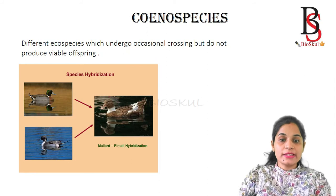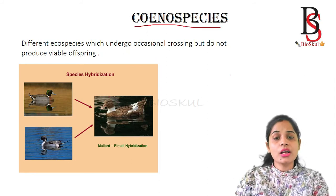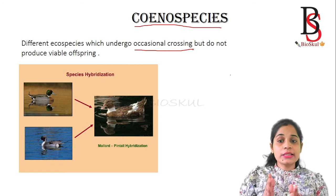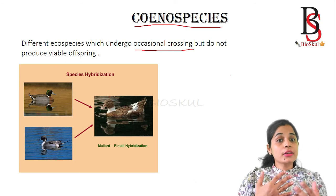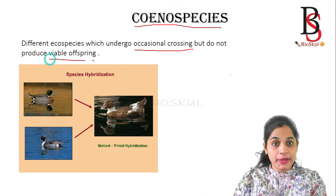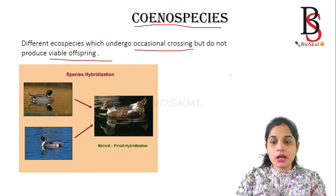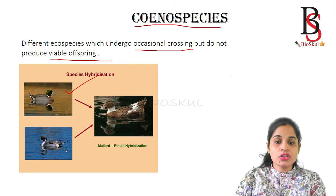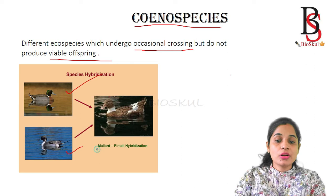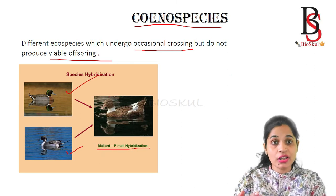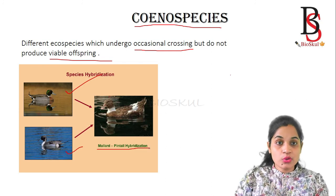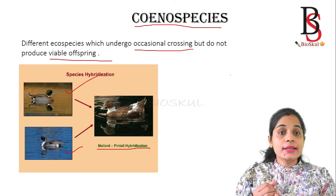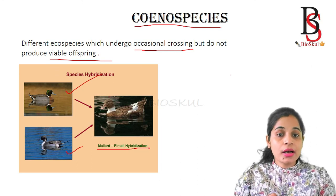Now we will see what is Coenospecies. Different Ecospecies which undergo occasional crossbreeding — mostly the terms Ecospecies and Coenospecies are used in parallel. Coenospecies defines those Ecospecies which undergo occasional crossbreeding but do not produce any viable offspring. One example is species hybridization in ducks: the mallard duck, when hybridized with another duck species known as the pintail duck, leads to the formation of viable offspring only rarely — in wild conditions the ratio is only 1 in 1000.